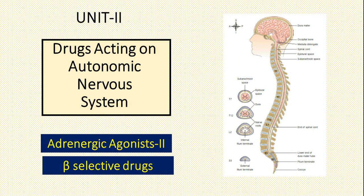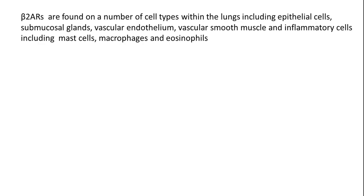Here we will see beta-selective agonistic drugs. We will cover many drugs in the beta-2 adrenergic receptor agonist category, which are very famous for their application in asthma management. Let's first briefly review what beta-2 adrenergic receptors are, and then we will go to the drugs category.